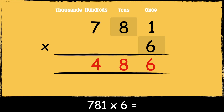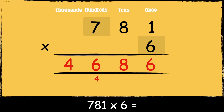Now we multiply six by eight tens: six times eight is 48. We carry the four below in the hundreds column as it represents four hundreds. Now we multiply six by seven hundreds: six times seven is forty-two, add the four hundreds gives forty-six. So the answer is four thousand six hundred and eighty-six.